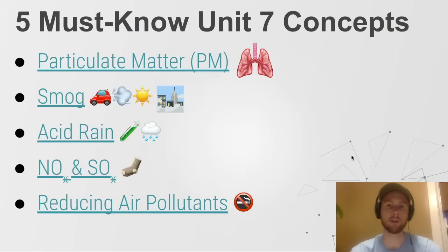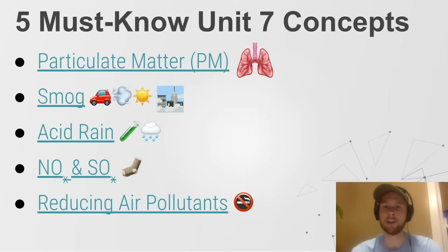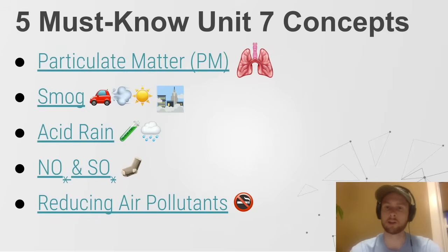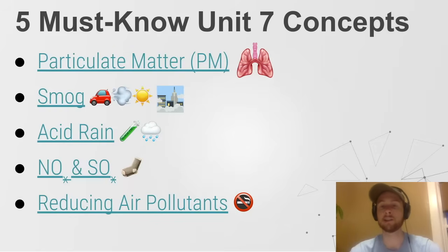Finally, we're on to Unit 7. The first topic is particulate matter — just a fancy word for dust or any particle that could be in the air. Your go-to answer: it is a respiratory irritant. It can inflame the lungs, worsen asthma and bronchitis, and drive up healthcare costs. Then we have photochemical smog, which comes heavily from nitrogen dioxide from car emissions. When that hits sunlight, it gets converted into photochemical smog, which lowers visibility and is a human health risk as a respiratory irritant.